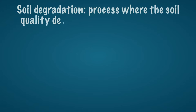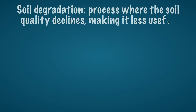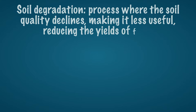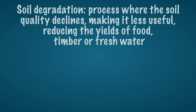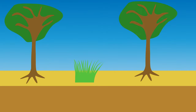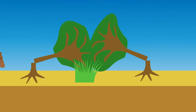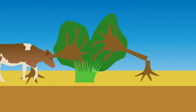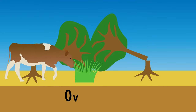If the soil degrades, it is actually less useful, reducing the yields of food, timber, or fresh water. This may be because people have poorly maintained the land. People remove the vegetation like trees and plants — for example, people need the wood, so there is deforestation. People can also graze cattle, and the cattle eat all the vegetation. This is called overgrazing.